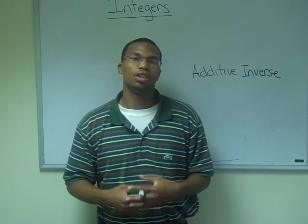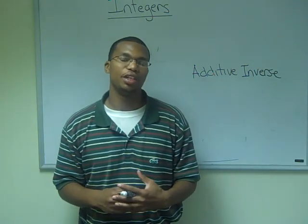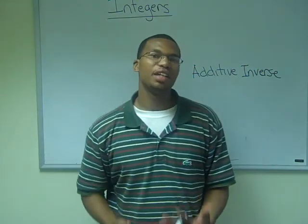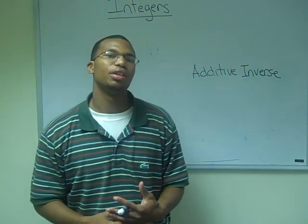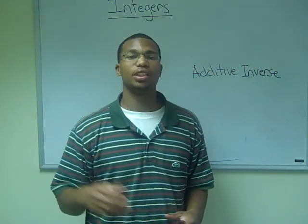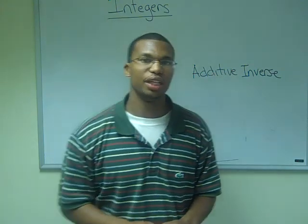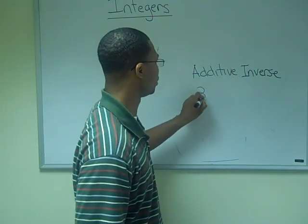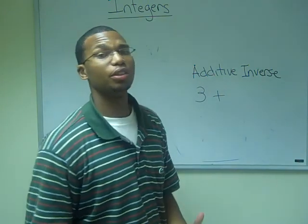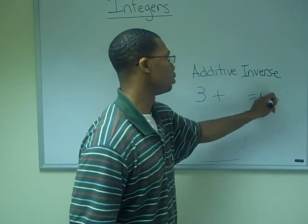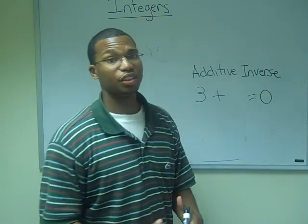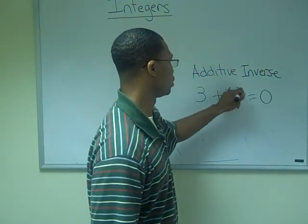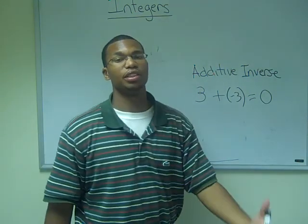The integers are the whole numbers with the inclusion of the additive inverse. Now I know you all may be scratching your heads and wondering, what is the additive inverse? Well the additive inverse is simply a number that once you add it to the other number, it will 100% of the time give you zero. So let me give you an example of that. Say we had positive three, and we wanted to find some number such that it would equal zero. Well the additive inverse of positive three would be negative three.